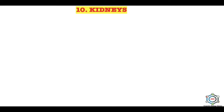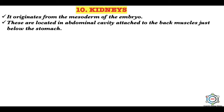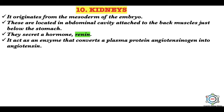The tenth endocrine gland is the kidney. It originates from the mesoderm of the embryo and is located in the abdominal cavity attached to the back muscles just below the stomach. The kidney secretes a hormone called renin, which acts as an enzyme that converts the plasma protein angiotensinogen into angiotensin. This causes vasoconstriction, raises blood pressure, and also causes release of hormones from the adrenal medulla.